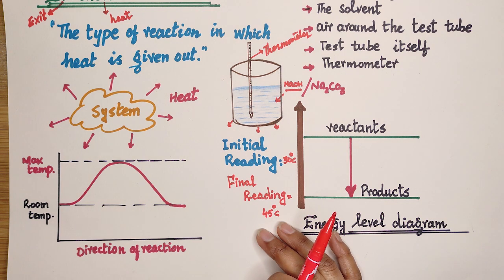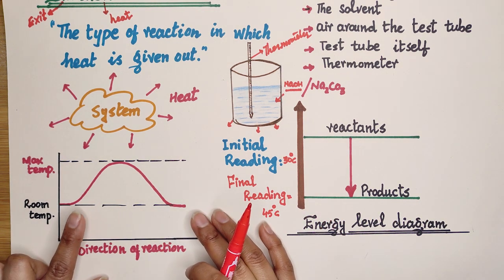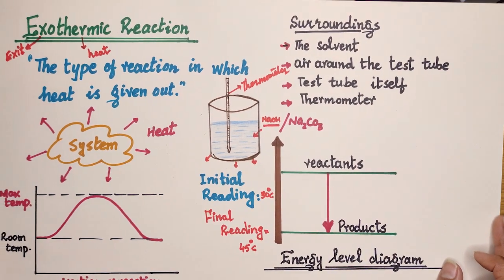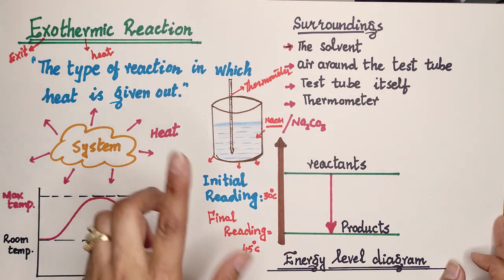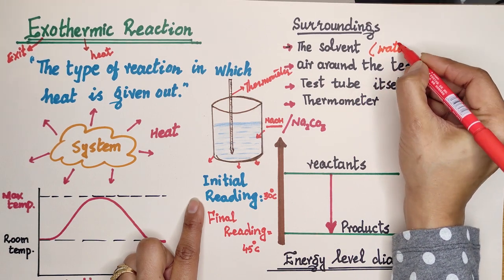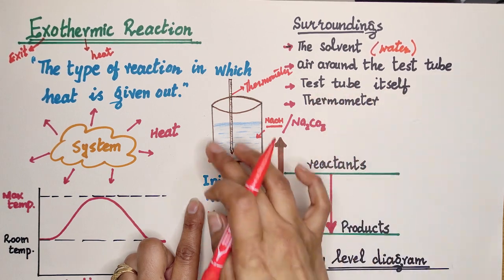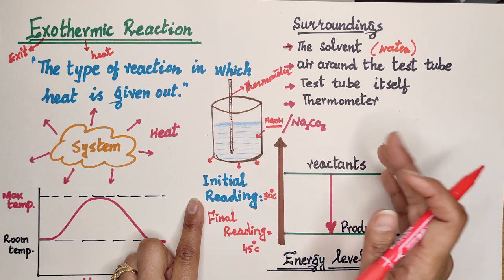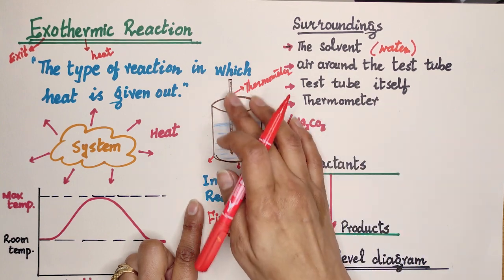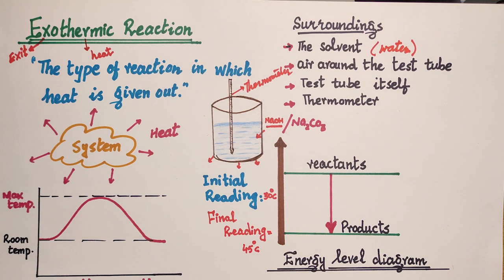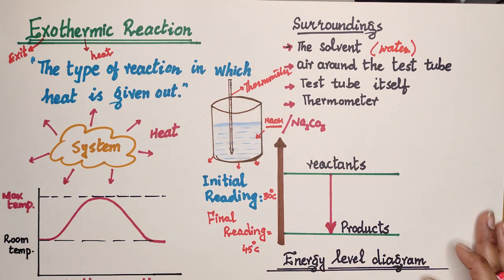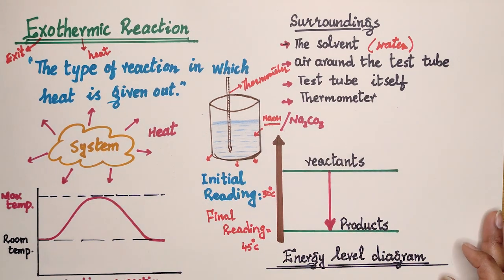The solution has less energy than the solid and water at the start, which describes this as an exothermic reaction. As for the meaning of 'surrounding': the surrounding is the solvent (such as water), the air around the test tube or beaker, the beaker or test tube itself, and the thermometer. Any part not involved in the chemical reaction is called the surrounding.